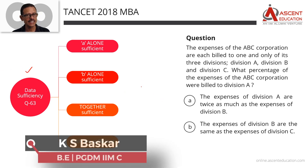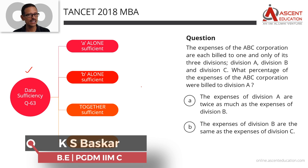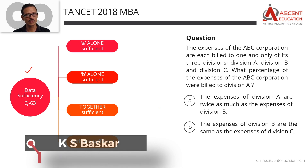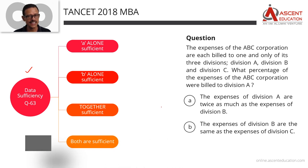In each version, the data sufficiency framework and the four answer options are presented in the same way, uniform on each version. It is not necessarily the same across versions. You can study the 2018 version — in 2018, it will be the same.